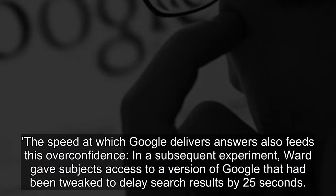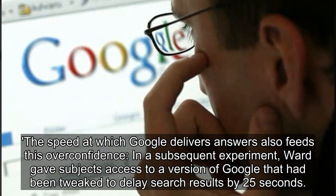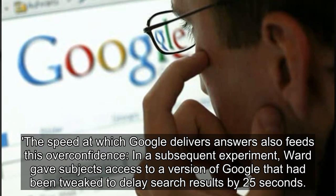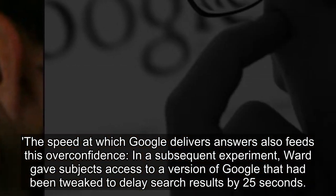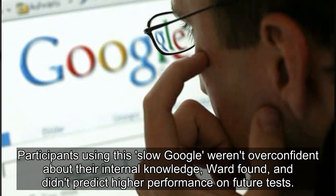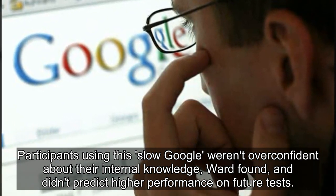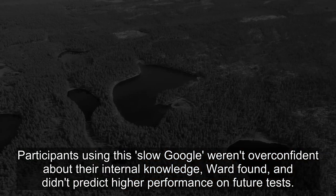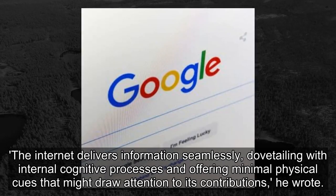In a subsequent experiment, Ward gave subjects access to a version of Google that had been tweaked to delay search results by 25 seconds. Participants who used this slow Google weren't overconfident about their internal knowledge, Ward found, and didn't predict higher performance on future tests.